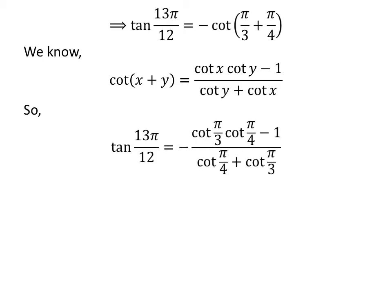Application of the above identity gives us tangent of 13 times pi upon 12 is equal to minus of cotangent of pi upon 3 times cotangent of pi upon 4 minus 1, upon cotangent of pi upon 4 plus cotangent of pi upon 3.